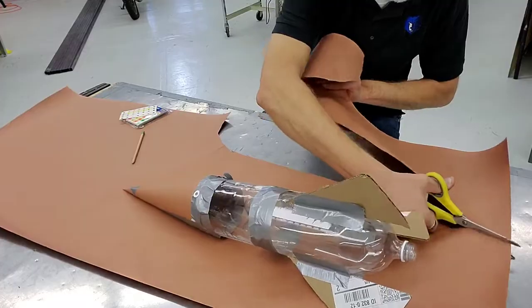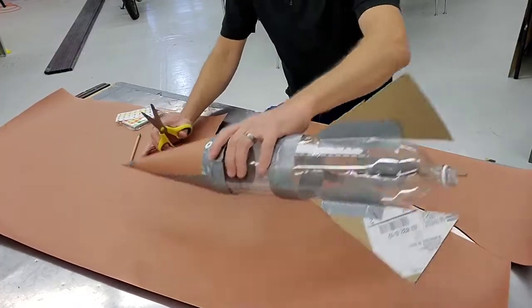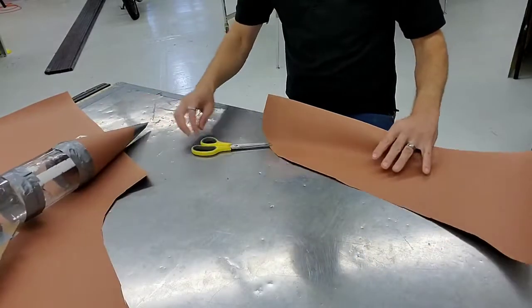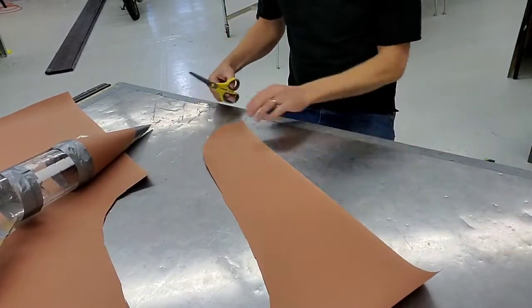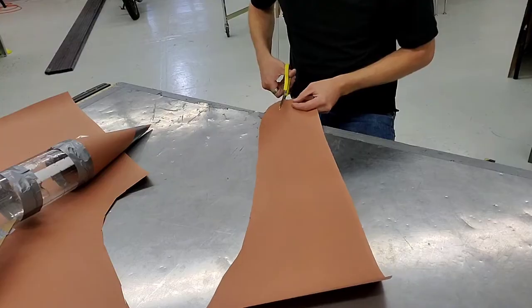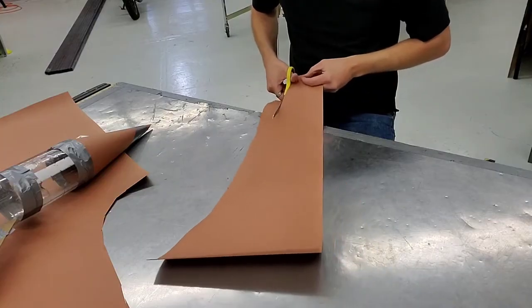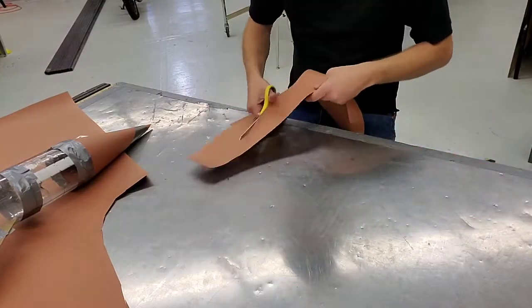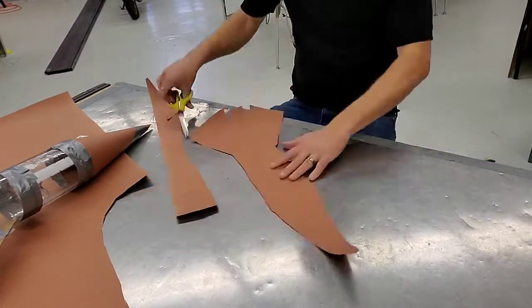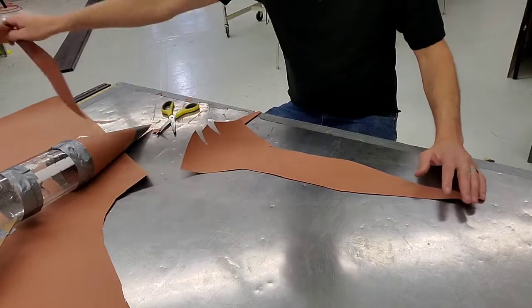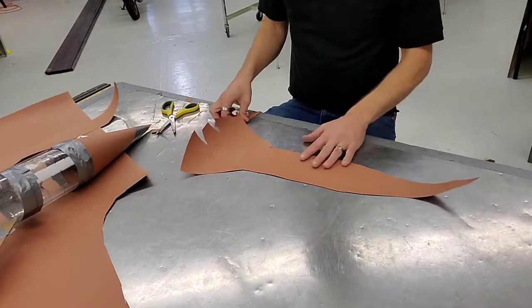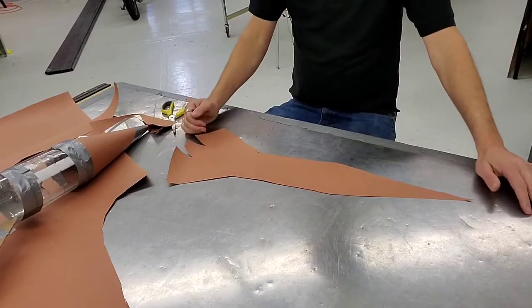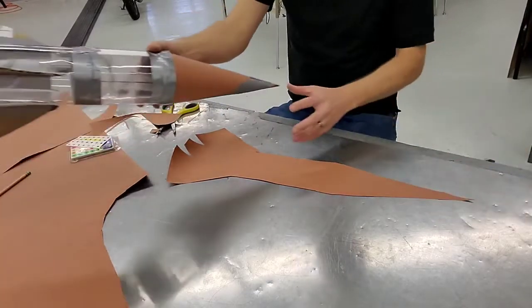That way if somebody needs this big piece of paper for their project, they can use that. Now I can take a little more time cutting my shape out here. Okay, so we've got an outline or a shadow of our rocket, fairly close.